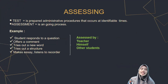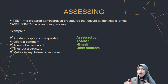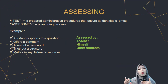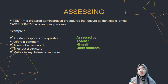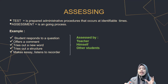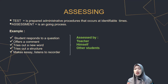Next is assessing. A test is a prepared, administrative procedure that occurs at identifiable times. Assessment is an ongoing process — for example, a student responds to a question, offers a comment, tries out a new word or structure, makes an essay, or listens to a recording. All these activities can be assessed by a teacher, the student himself, or other students.